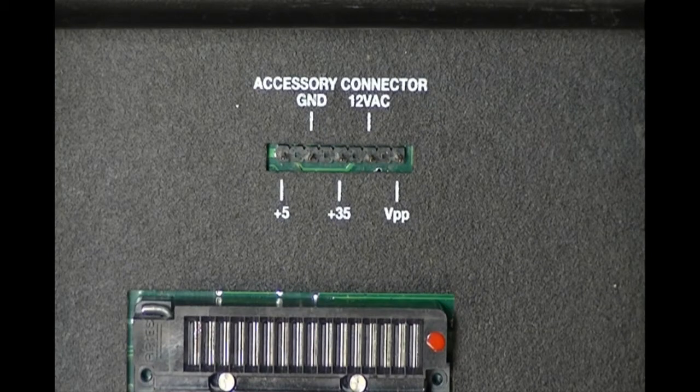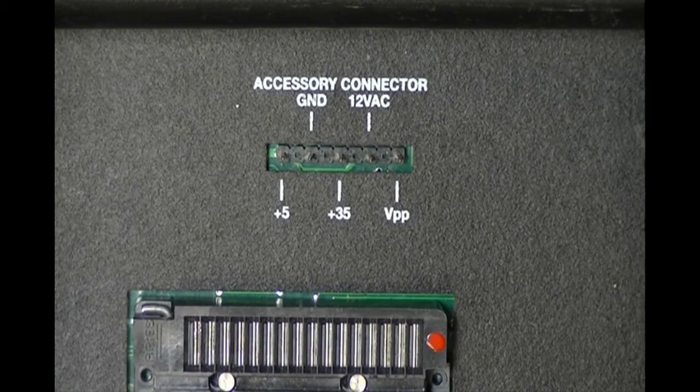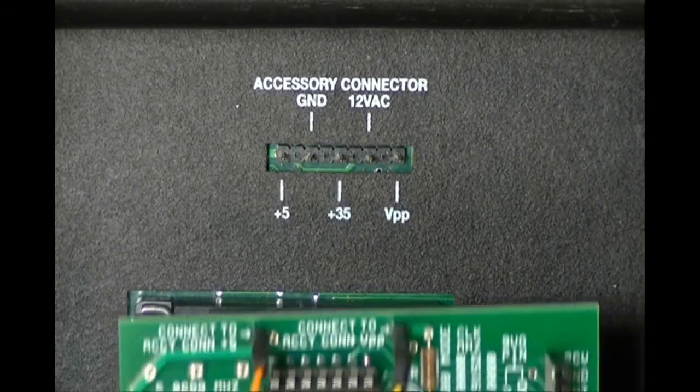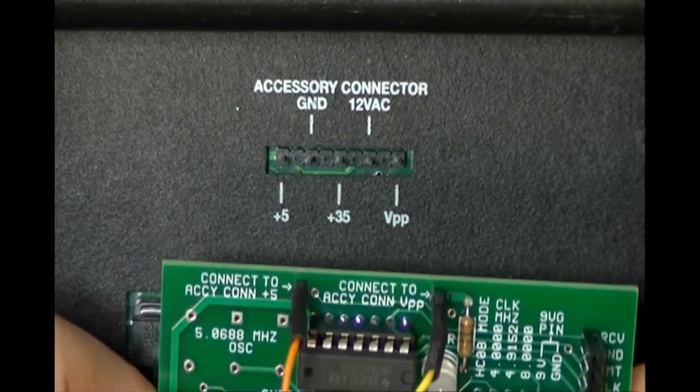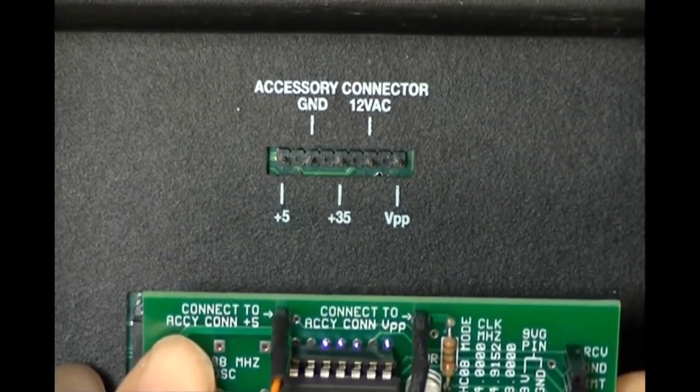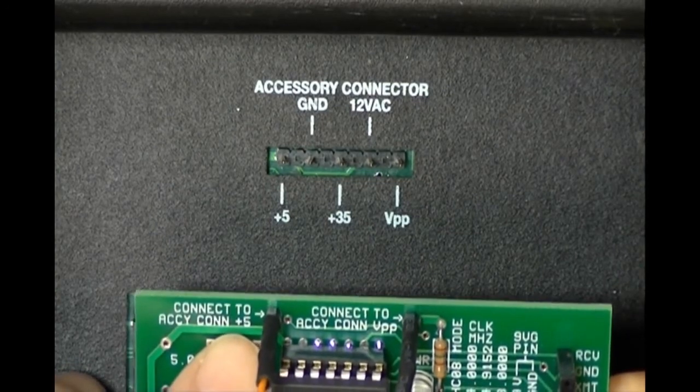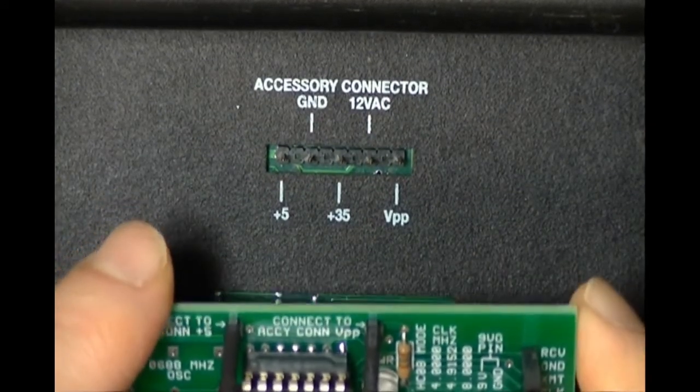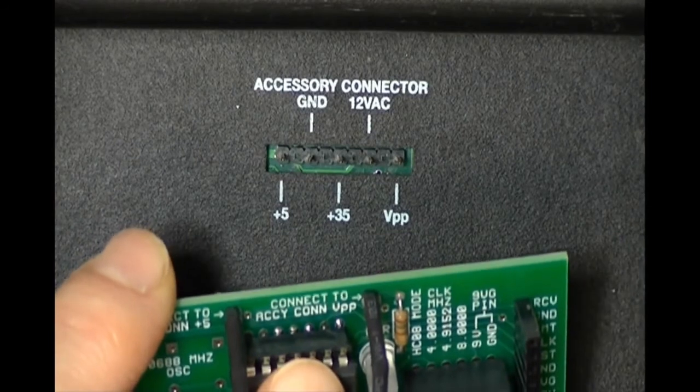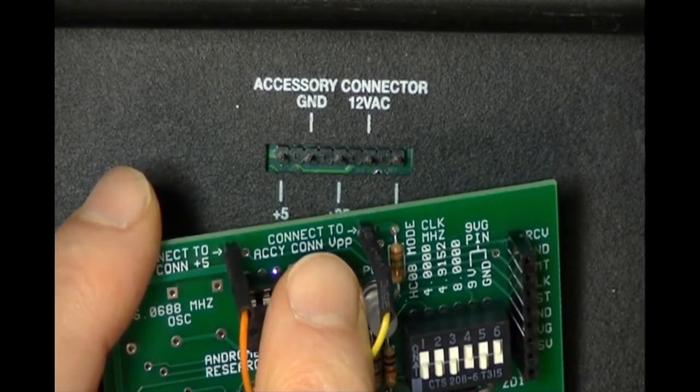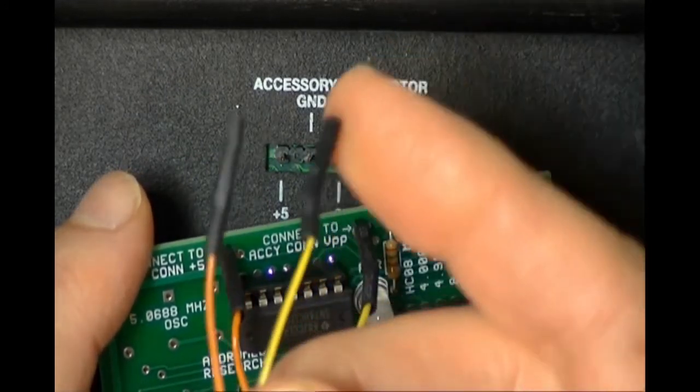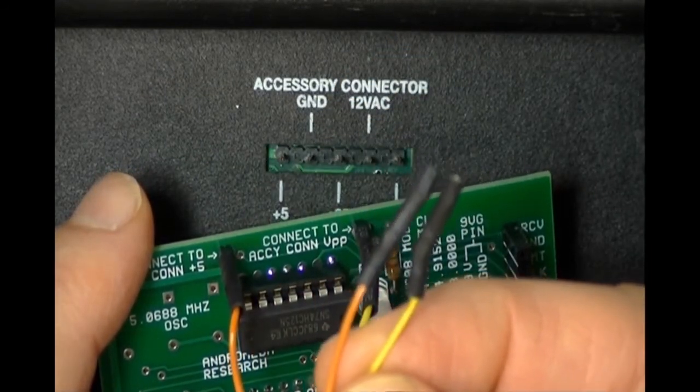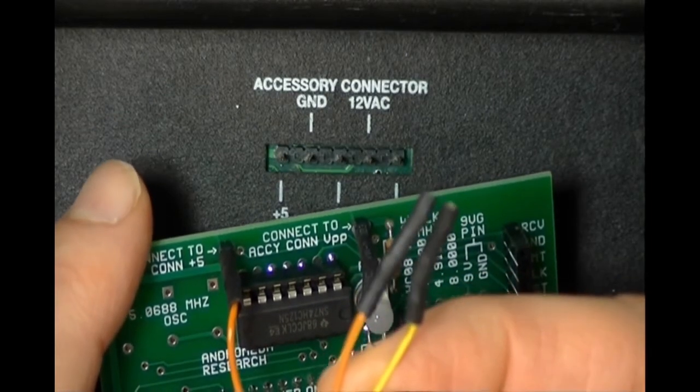If you look at the ACOM 2 adapter, which is here, you will notice that it tells you to connect to accessory connector plus five and to connect to accessory connector VPP. So the orange wire is connected to plus five and the yellow wire is connected to VPP. I'm going to go ahead and do that.